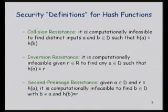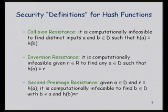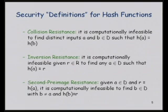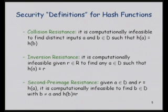Here are the security definitions — and you'll notice I put the word definitions in quotes. These are the ones you'll find in your typical crypto texts, and oftentimes they forget the quote marks and write them down as real definitions when in fact they're not very good. The terms people care about are: first, collision resistance — you can't find two distinct inputs that hash to the same output; second, inversion resistance — given a hash digest, you can't find any input that hashes to that output; and third, second preimage resistance — if you're given an input-output pair, you can't find a distinct document that also produces the same hash value.